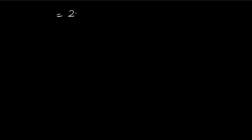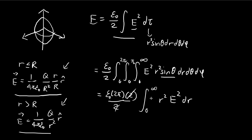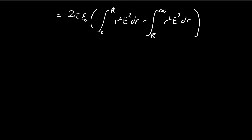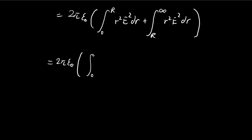For the next step we have two pi epsilon, and for the integral I'm going to break this up into two sections: from zero to R — inside the sphere — and from R to infinity outside the sphere. Now I substitute the corresponding electric field. From zero to R, the inside field gives us (1 over 4π epsilon) times q over r squared times (r over big R), all squared, times dr.